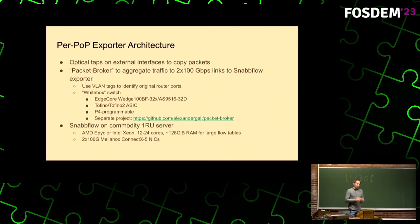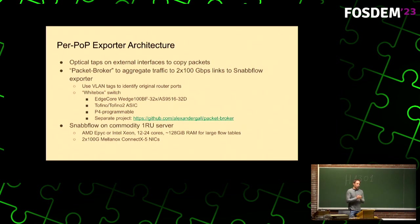So how do we do this? On the borders, these are all fiber connections, so we have optical splitters. We create a copy of all the traffic flow. Then we have a packet broker — basically a switch that aggregates all the packets and sends them out on 200-gig ports to our actual exporter box.